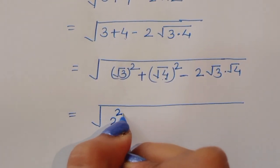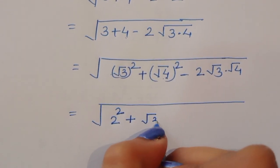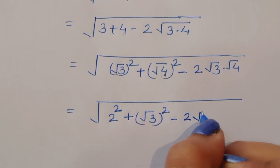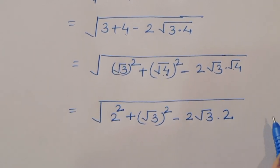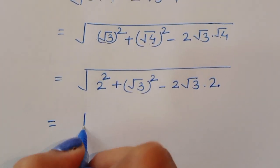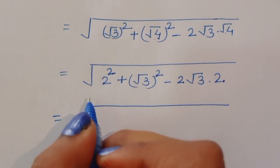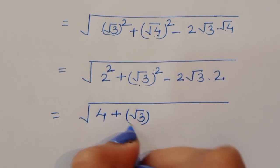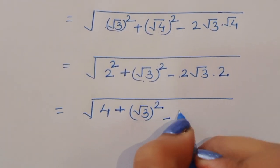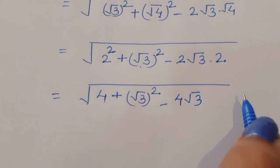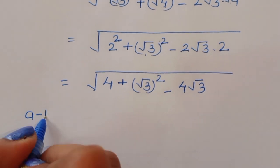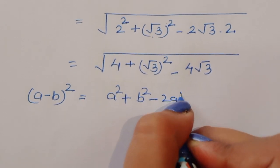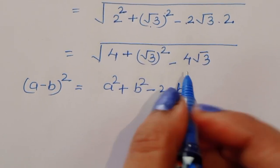So we have 2 squared plus square root of 3 squared minus 2 times square root of 3 and square root of 4, which is 2. Now we know the formula: A minus B whole square is equal to A squared plus B squared minus 2AB. This is the formula of A minus B whole square.